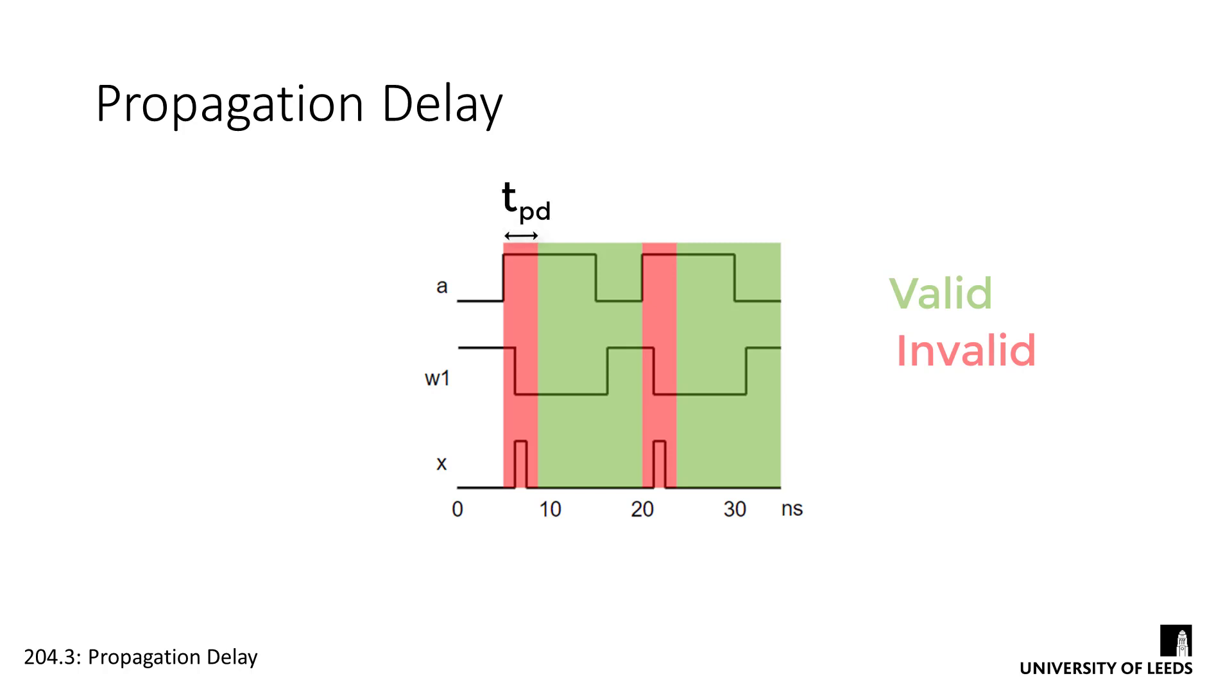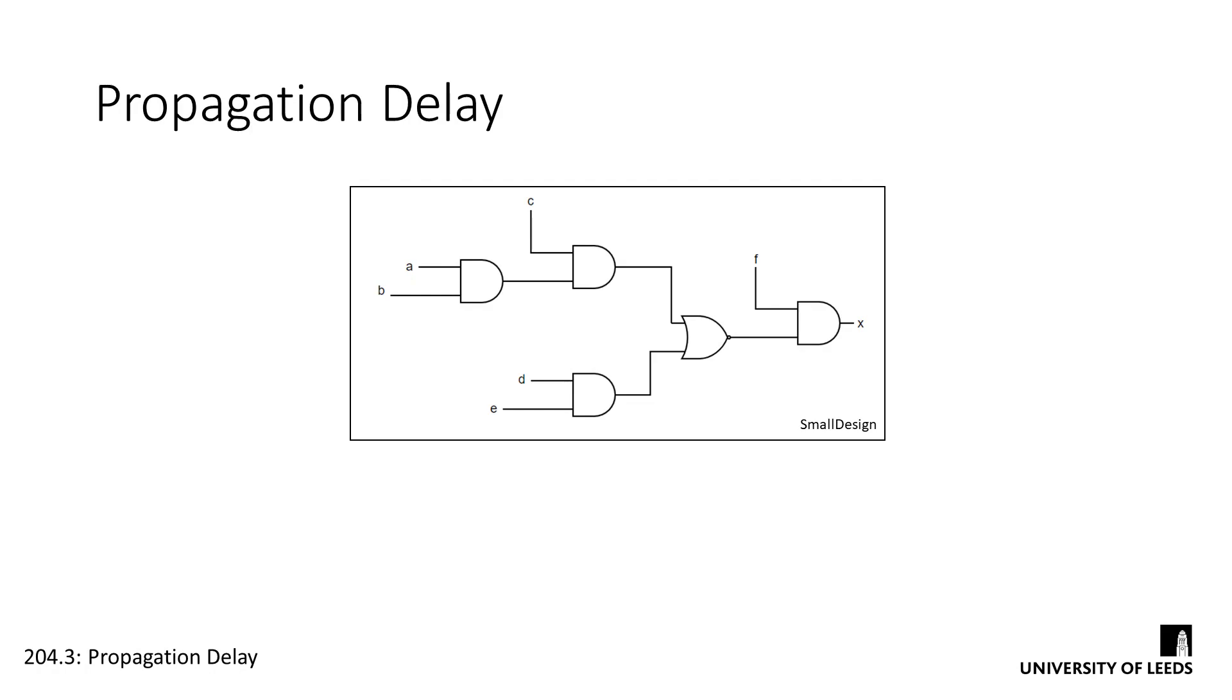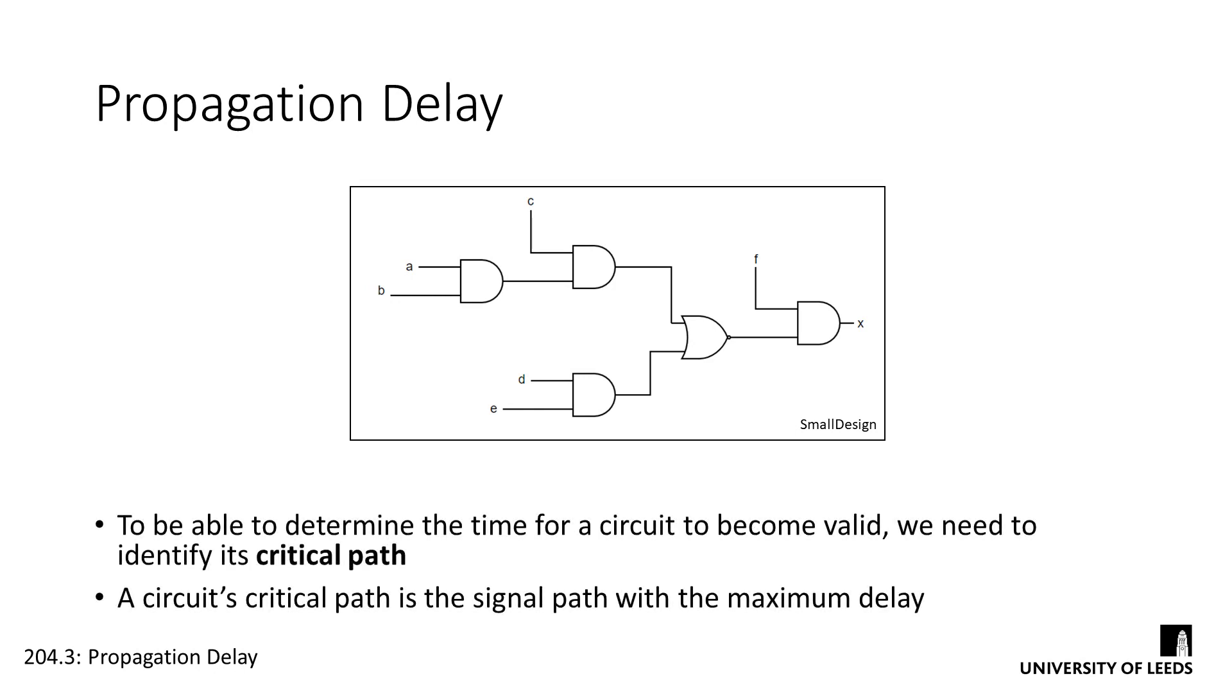This worst-case scenario timeframe is the circuit's propagation delay, TPD. To determine the time for the circuit to become valid, we need to identify its critical path. A circuit's critical path is the signal path with the maximum delay where changing an input takes the longest route to affecting an output and therefore directly defines the circuit's propagation delay.